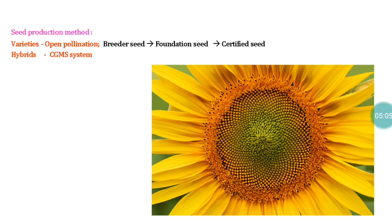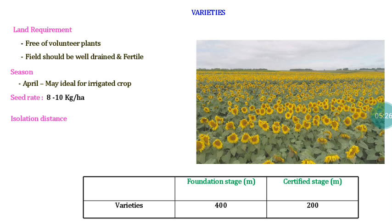Regarding stages of seed production, we follow a three-generation system: breeder seed, foundation seed, and certified seed. Varieties are multiplied by controlled open pollination, whereas hybrids are produced using the cytoplasmic genetic male sterility or three-line system. For land requirement, the selected field should not have been cultivated with another variety of the same crop in the previous season, as volunteer plants are pollen-dominant. Land should be free from volunteer plants to maintain genetic purity.